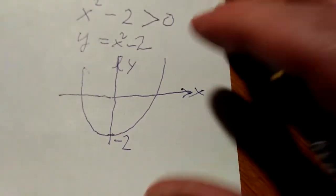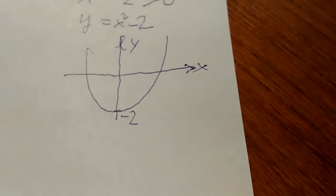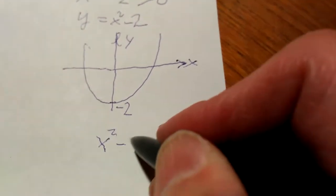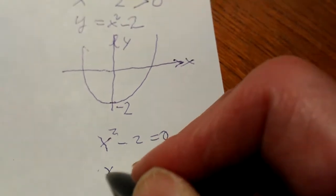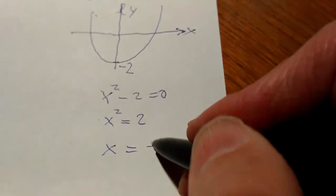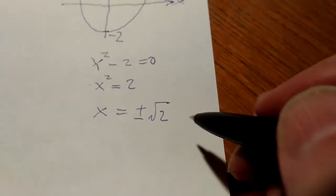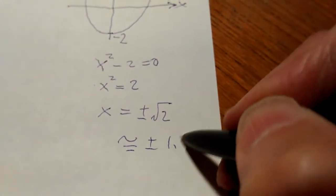Let's find the two x-intercepts. To find the x-intercepts we let y equal 0. So this is x squared minus 2 equals 0, which means x squared equals 2, and x is equal to plus or minus square root of 2, or roughly plus or minus 1.2.